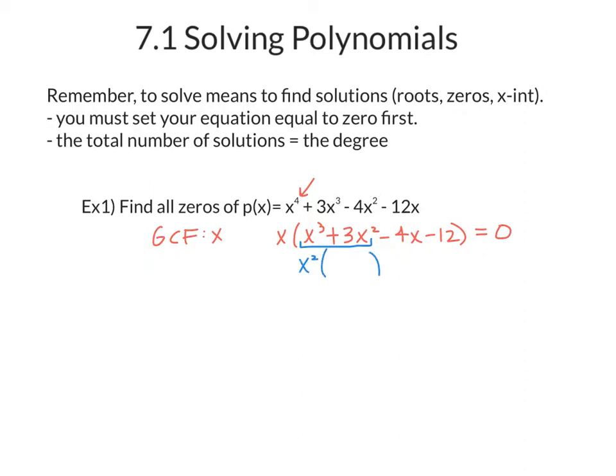That's x squared. And then kind of undistribute. So I'm thinking to myself, x squared times what gives me x to the third? That's x. x squared times what gives me 3x squared? That's 3. Remember, your second one should kind of match. So I'm going to take out a negative 4. And if I undistribute there, that gives me x plus 3 as well.